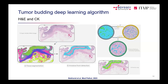Two algorithms were published — one for H&E, one for cytokeratin. Questions remain about the biological meaning of the arbitrary four-cell cutoff, and the distance threshold defining the 'invasion front' — currently set at 500 microns, adopted from Galon's immunoscore definition.